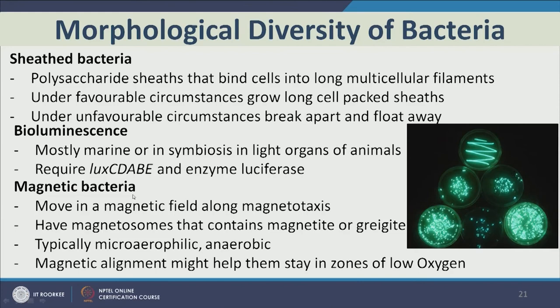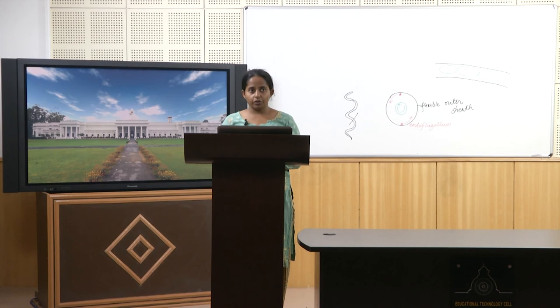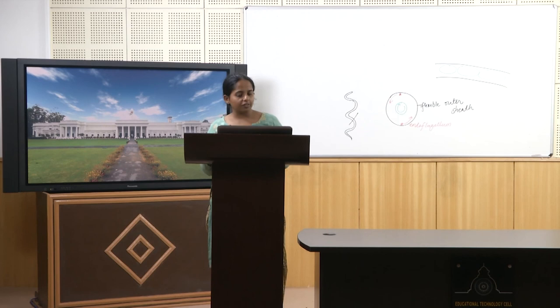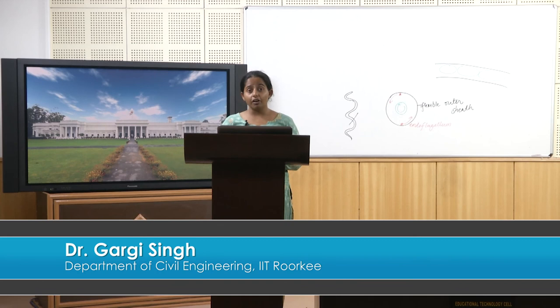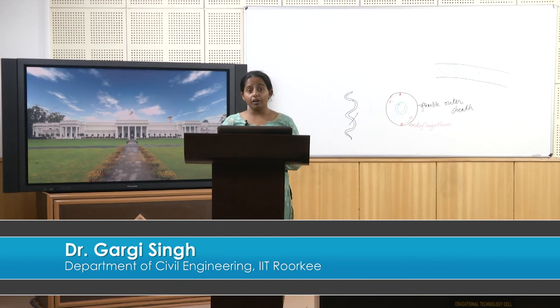Magnetic bacteria are really neat — they have magnetosomes, which are cell parts containing magnetite or greigite, both forms of iron that are magnetic in nature. Because of this, they tend to move and align themselves along the north-south pole of the earth. The hypothesis is that this alignment allows them to stay in low-oxygen zones — like a compass directing where to go. They are typically microaerophilic and anaerobic and do not like oxygen. In the next lecture we will continue and talk about ecological diversity — microbial ecology in different environments — and that is all for functional diversity of bacteria.